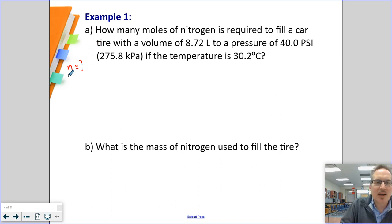It has a volume of 8.72 liters and a pressure of 40 psi. But luckily, they told us the pressure in a unit we like, 275.8 kilopascals. The temperature is 30.2 degrees Celsius. We already know we don't like degrees Celsius, so we're going to add 273.15 and get our temperature to be 303.35 kelvins.